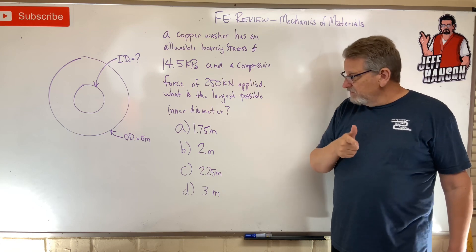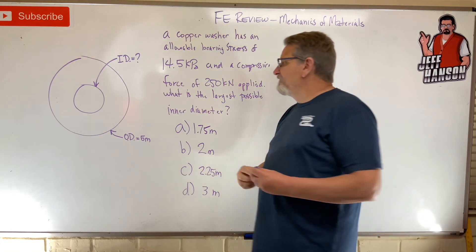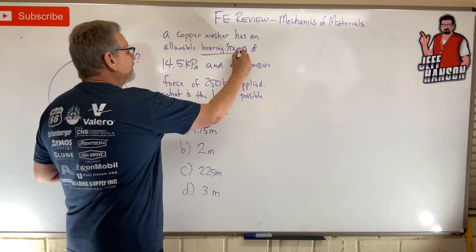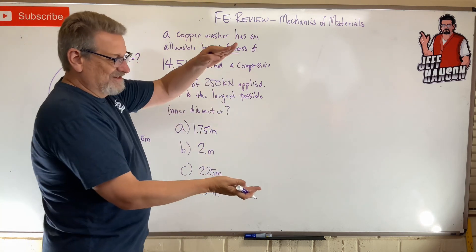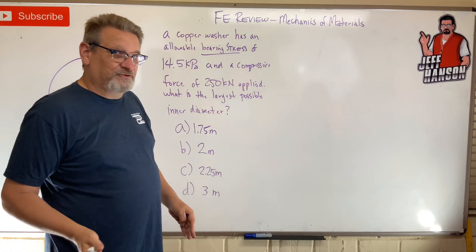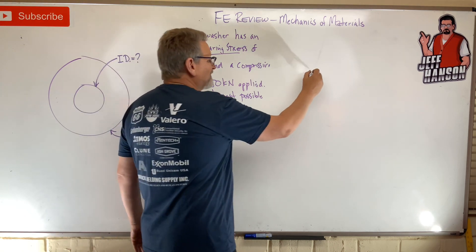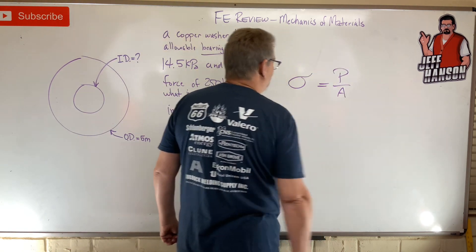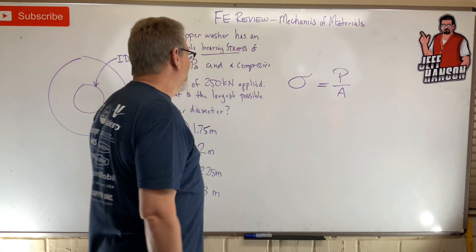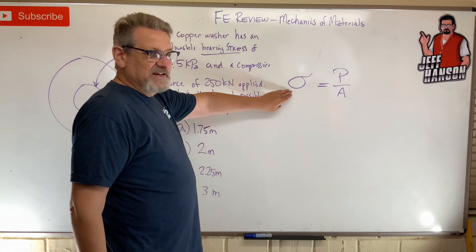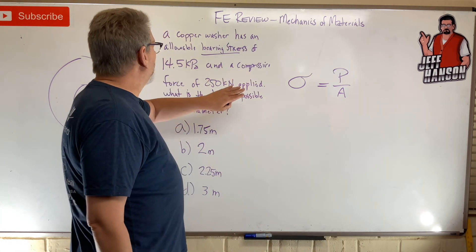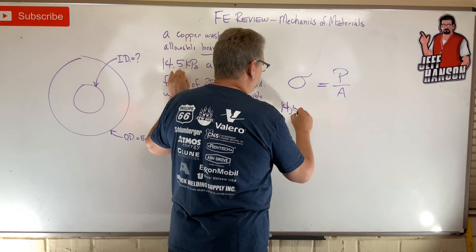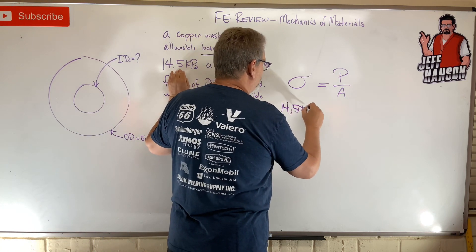Bearing stress is just compressive stress — it's just sigma, that's all it is. So sigma equals 14.5 kilopascals, which I'll write as 14,500 newtons per meter squared.